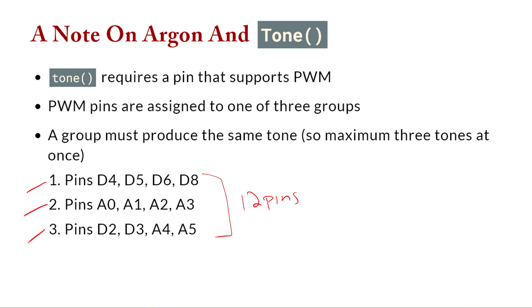What that means is, yes, you can produce a pulse width modulation value on pin D4 and D5, D6 and D8 at the same time, but because they're in the same group, it's going to be the same pulse width modulation value. So just keep that in mind. If you have different pins connected, they'll produce the same variance, which might not be what you want.